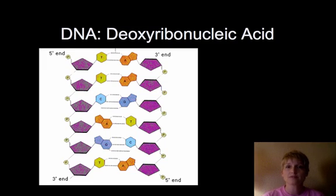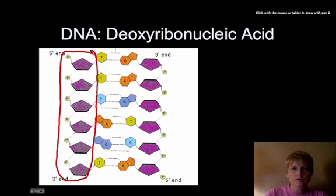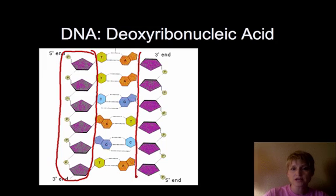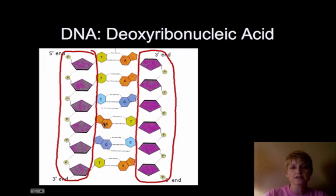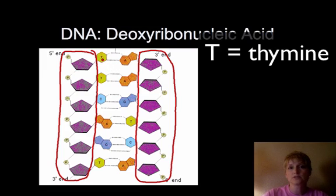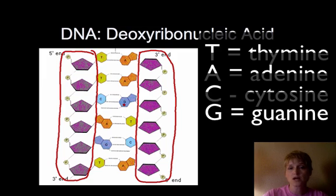DNA is deoxyribonucleic acid — a nucleic acid. Its structure is made up of a sugar-phosphate backbone. You can see here the sugar and the phosphate to the side, on either side of that familiar DNA double helix. This is the backbone that helps maintain DNA's structure. Inside you see the base pairs: T for thymine, A for adenine, C for cytosine, and G for guanine.